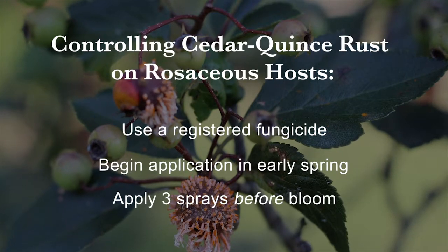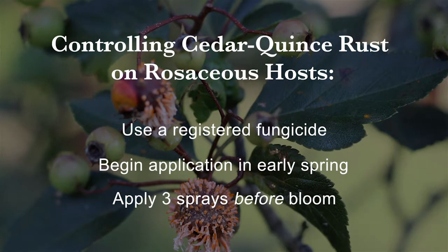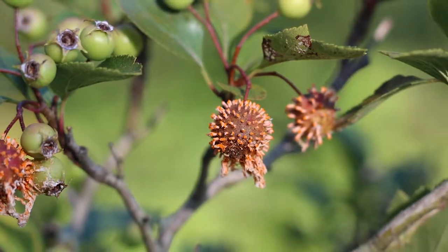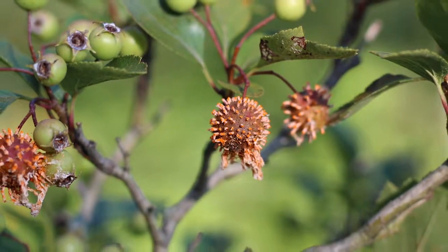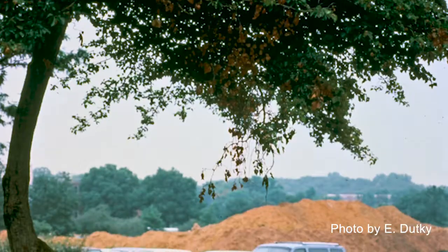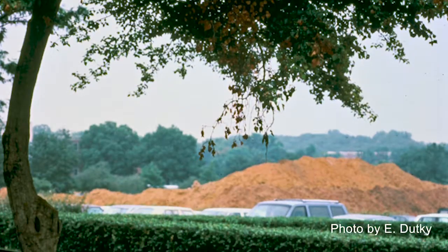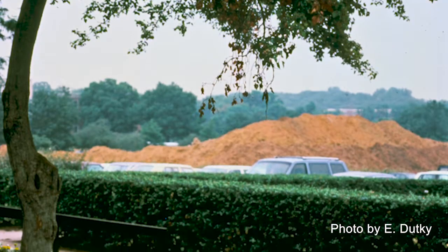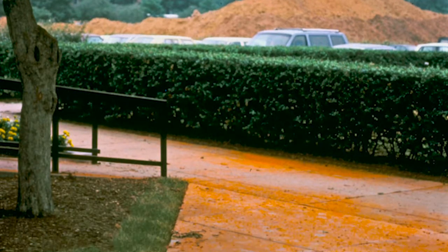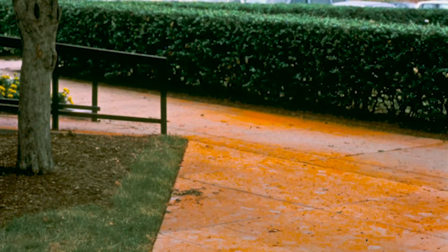Three sprays of a registered fungicide before bloom will generally prevent infection of the rosaceous host. After bloom, the fungicides are not effective. So you can try spraying a preventative fungicide, or you can just enjoy these trees, which kind of look like they're in bloom — but they're really in rust.